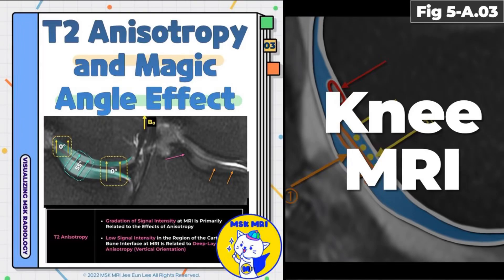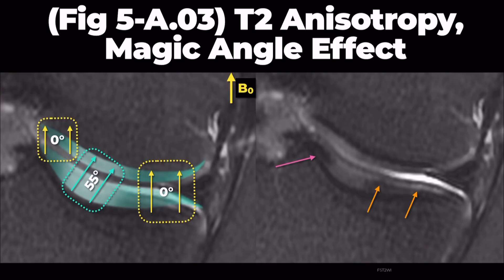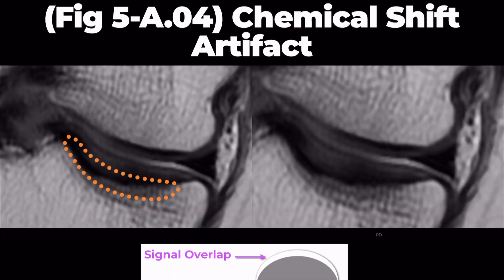Today, we'll examine three critical MRI artifacts impacting our interpretation of articular cartilage and subchondral bone plate imaging: T2 anisotropy, the magic angle effect, and chemical shift artifacts.